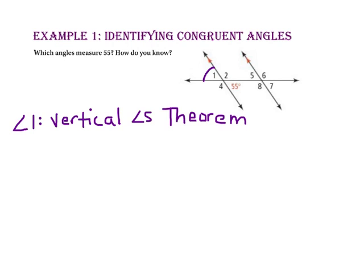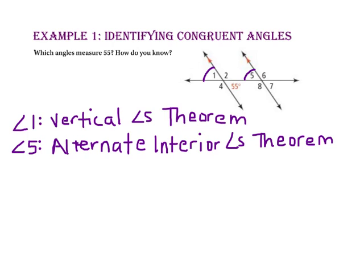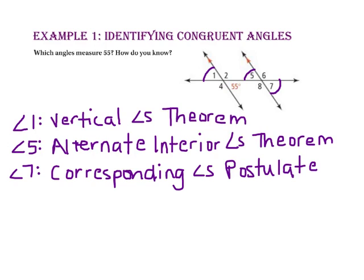Next, let's look for alternate interior angles. Since angle 5 is an alternate interior angle to the 55-degree angle, it will also be 55 degrees. And finally, let's look for corresponding angles. Since angle 7 is corresponding to the 55-degree angle, we know that it is also 55 degrees. So angles 1, 5, and 7 all have the measure of 55.